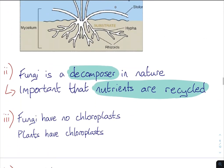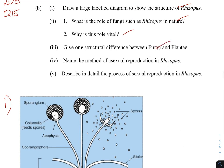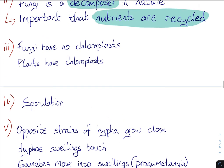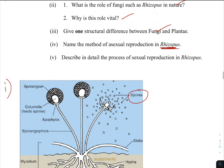Give one structural difference between fungi and plants. Fungi have no chloroplasts; plants have chloroplasts. You must treat the examiner as if they have no knowledge of biology — spell it out for them. If you say one of them has chloroplasts, you must say the other one does not. Name this method of asexual reproduction in Rhizopus — not yeast, where it's budding, but for Rhizopus it's called sporulation: producing spores.